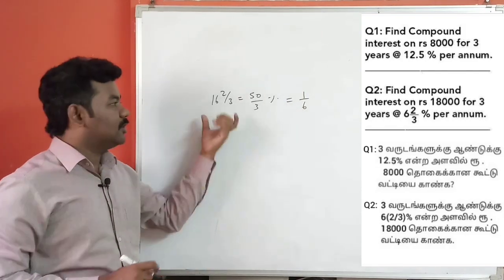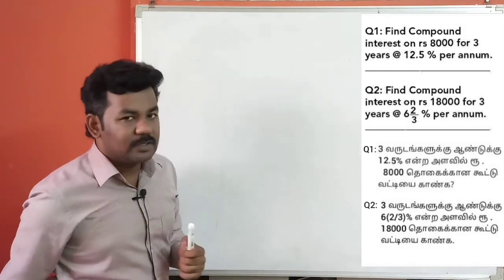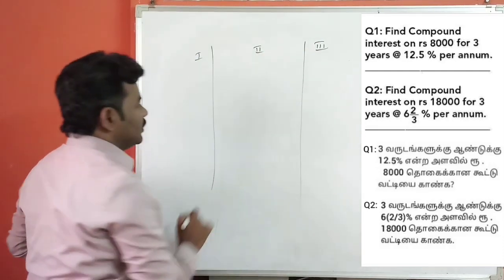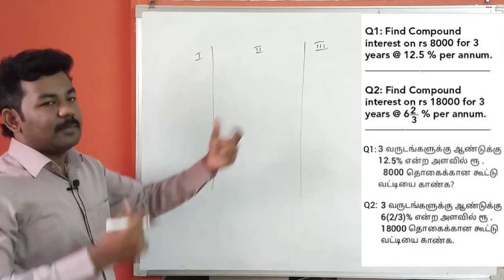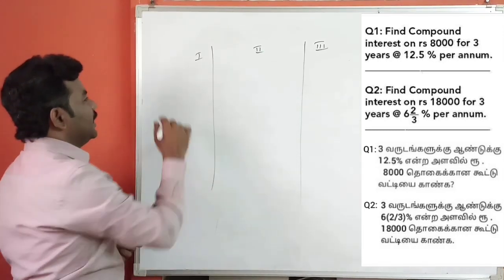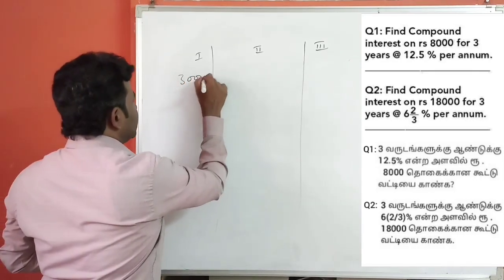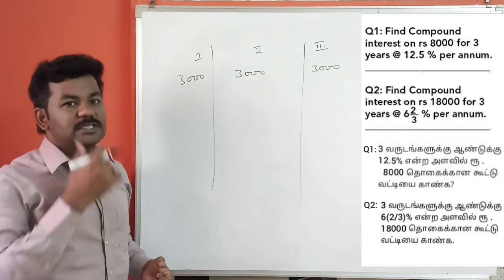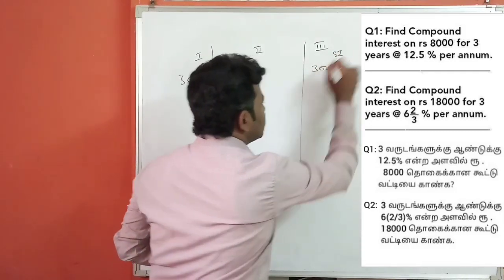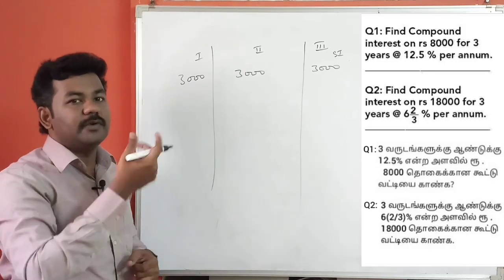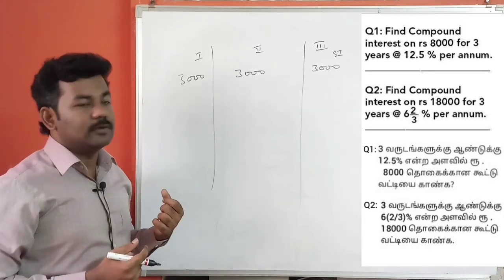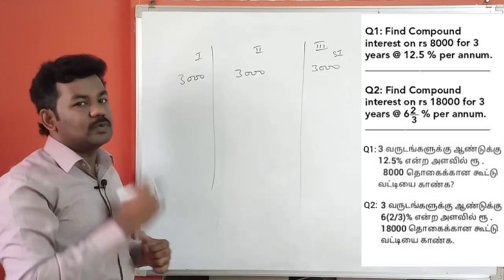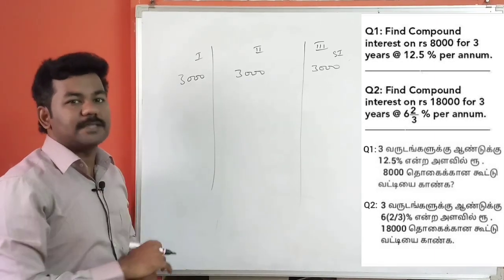In 3 years, we calculate year by year: year 1, year 2, and year 3. For 18,000 multiplied by 1 by 6, we get 3,000. Then for the next level of interest, 3,000 multiplied by 1 by 6 gives 500. That means 500 is the second layer interest.